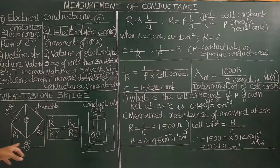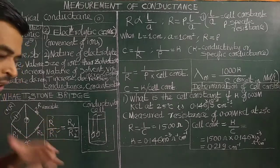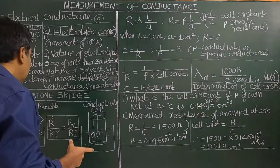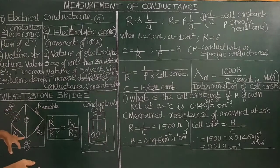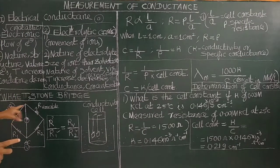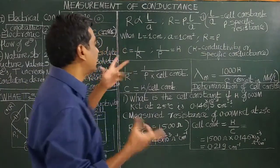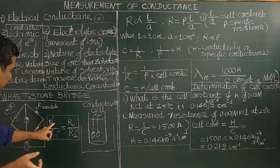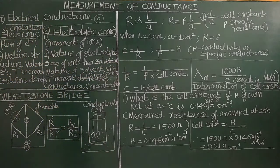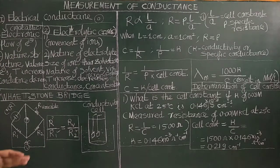The Wheatstone bridge is connected to an AC source of power, not a DC source. DC source cannot be used because if DC source is used, electrolysis will take place in the cell. In order to measure the conductance or resistance of the electrolytic solution, AC power is used to avoid electrolysis.